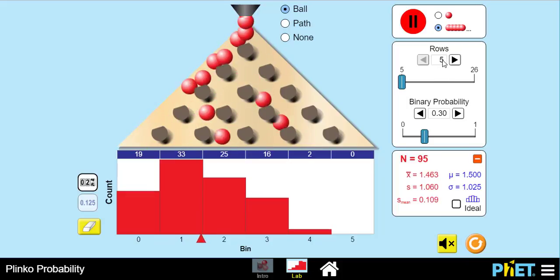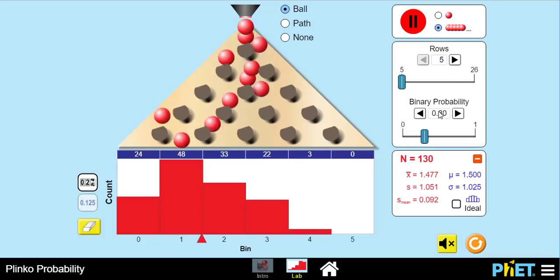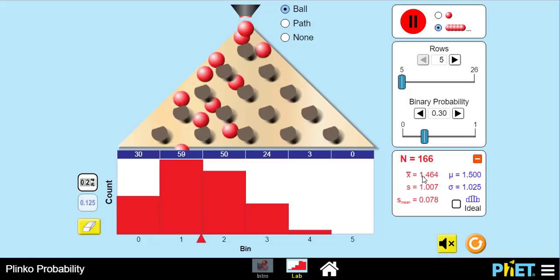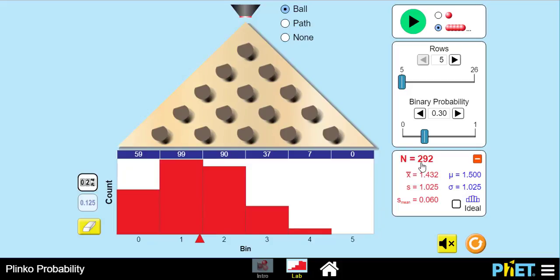What we are interested in is the number of trials that the balls experience and what the probability is, and how that relates both to the mean and the standard deviation of the final histogram. I can see this one stabilized around 1.4 after I've done almost 300 trials.